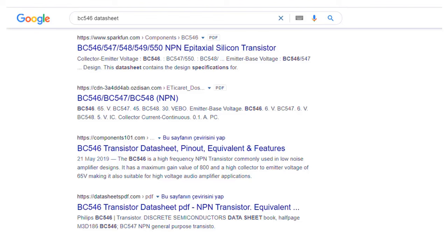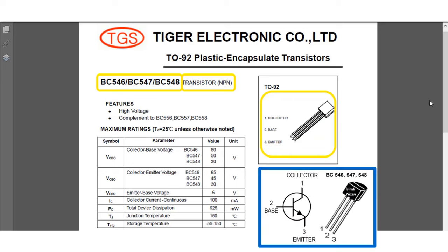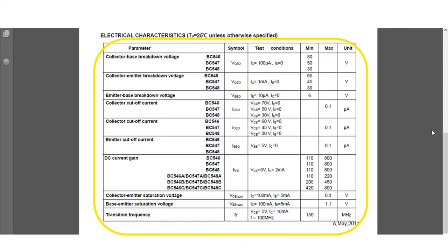For example, when we look at the datasheet of the widely used BC546, BC547, and BC548 BJT transistors, we can find that they are NPN and identify the pin naming. We look at the surface with the name written while detecting the pins and identify them according to the numbers 1, 2, and 3. In this BJT transistor, the left pin is the collector, the middle pin is the base, and the right pin is the emitter. We can also find maximum operating parameters and electrical characteristics.